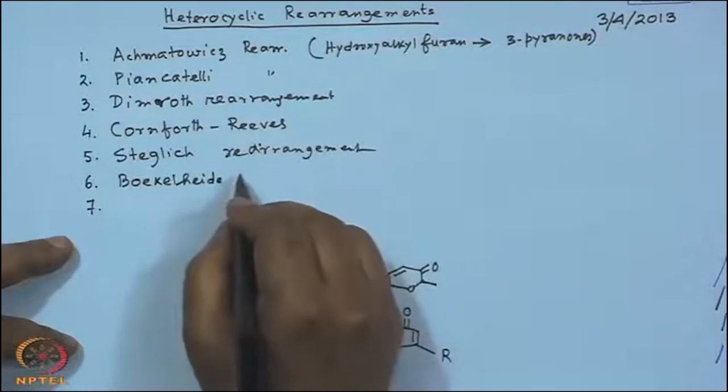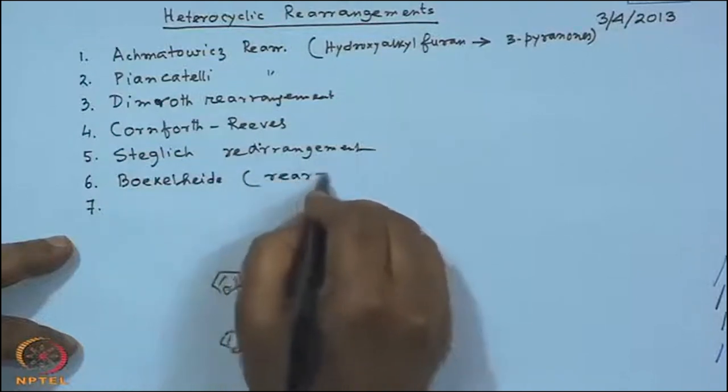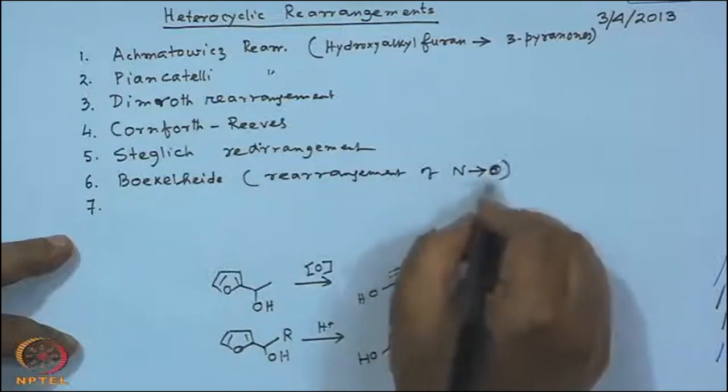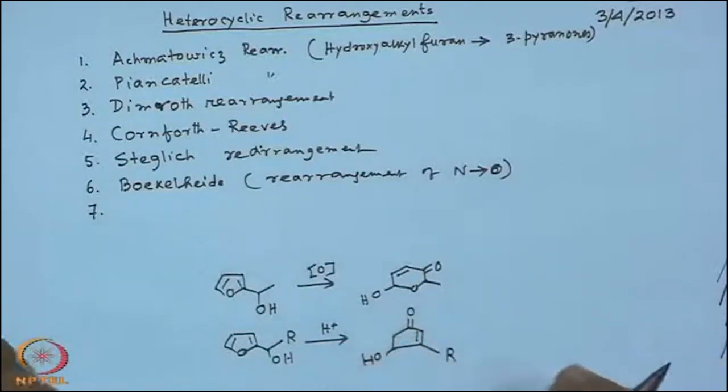Boekelheide rearrangement is pretty similar to the Polonovski reagent and basically deals with rearrangements of aromatic N-oxides. Under this category there are other things like Gabriel-Coleman rearrangement and Ferrier rearrangements, but those are not really directly related to heterocyclic chemistry. In principle, if you have studied any rearrangement in carbocyclic chemistry, that can be applied to heterocyclic chemistry - but I am not considering those, for example the Claisen rearrangements or 2,3-sigmatropic rearrangements, which are known for aliphatic or non-heterocyclic systems.